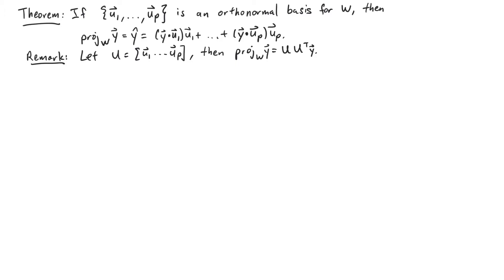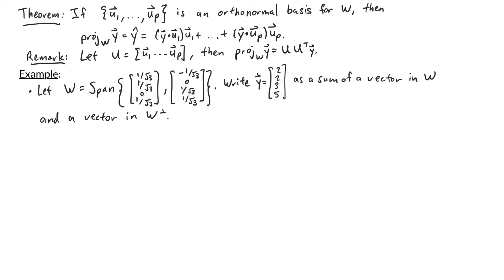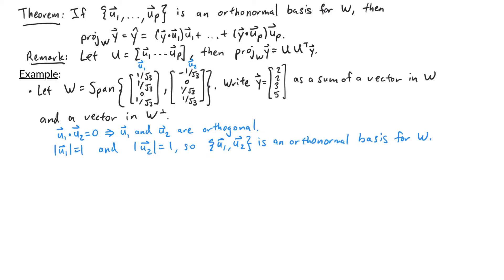Let's look at an example where we have an orthonormal basis for w. Here w equals the span of (1/√3, 1/√3, 0, 1/√3) and (-1/√3, 0, 1/√3, 1/√3). Let's call these vectors u1 and u2. We're asked to write the vector y = (2, 2, 3, 5) as a sum of a vector in w and a vector in w-perp. You can check that u1 and u2 form an orthonormal set: their dot product is 0, so they're orthogonal, and their lengths are both 1, making them an orthonormal basis for w.